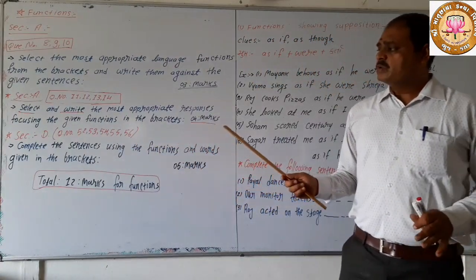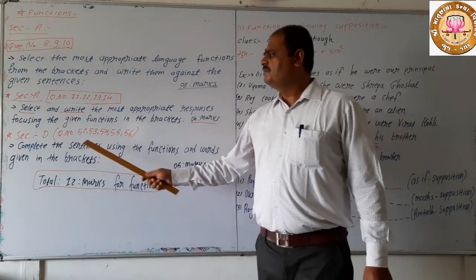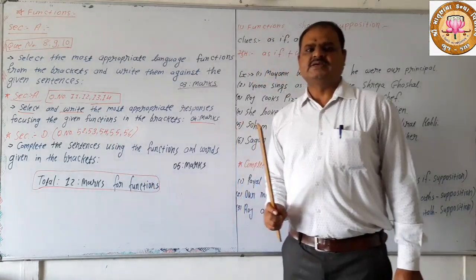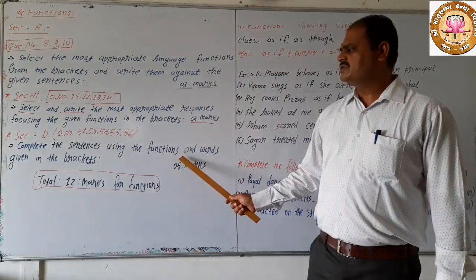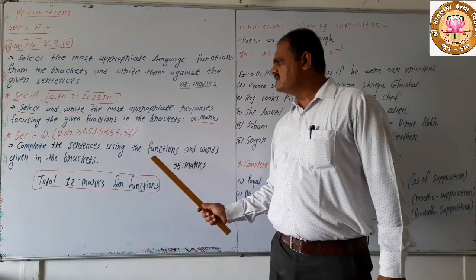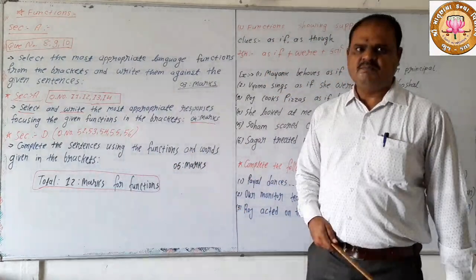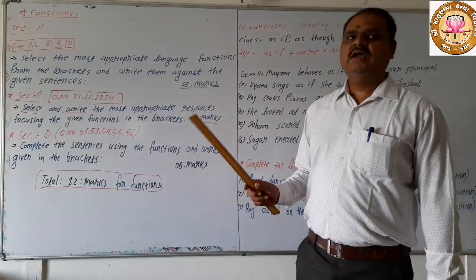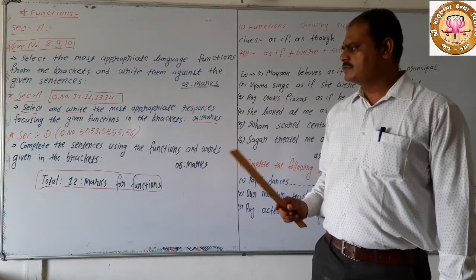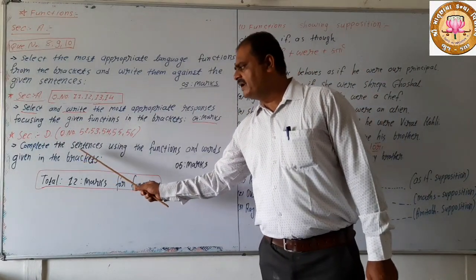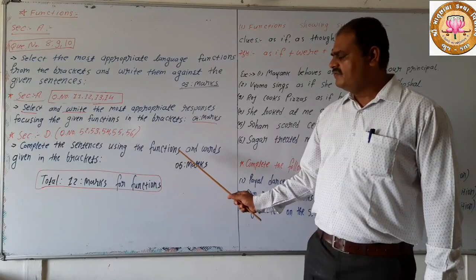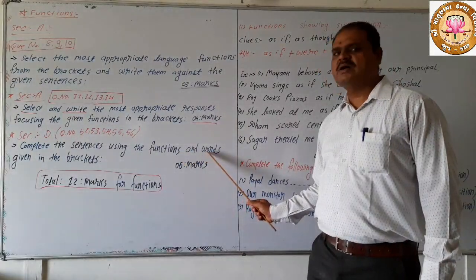In Section 2, question numbers 52, 53, 54, 55, and 56: complete the sentences using the functions and words given in the brackets. You will be given five incomplete sentences to complete.